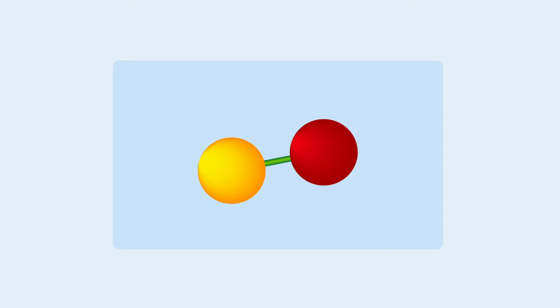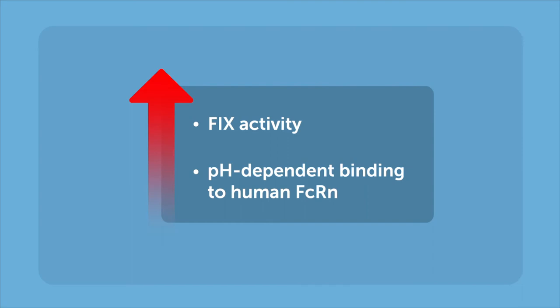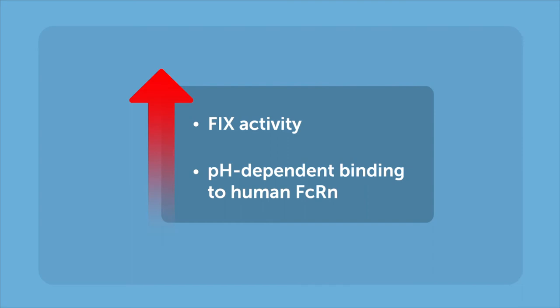First, they developed a linker for more efficient release of F9 from HSA. They then replaced F9 with a natural variant called Padua and coupled that with an engineered HSA called QMP, or superalbumin. This sophisticated molecular design improved both F9 activity and its pH-dependent binding to human FCRN.